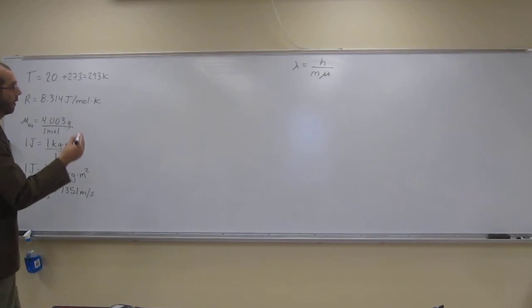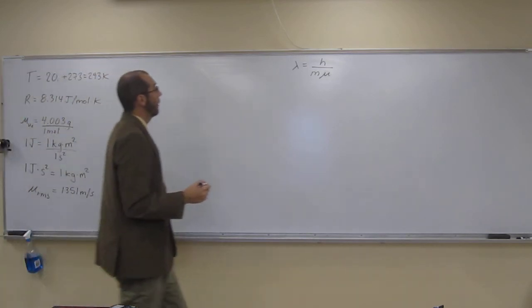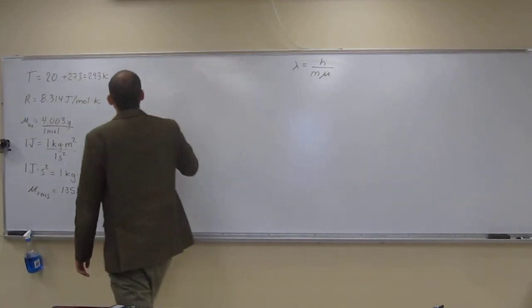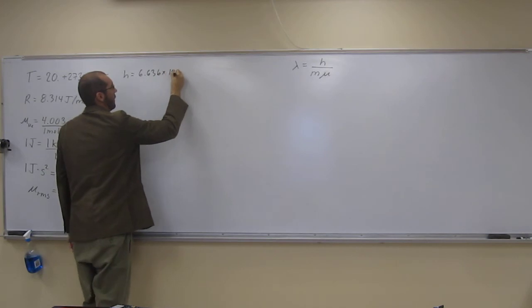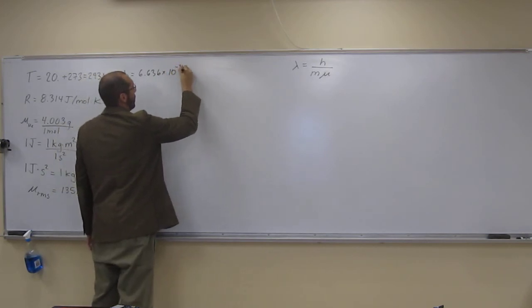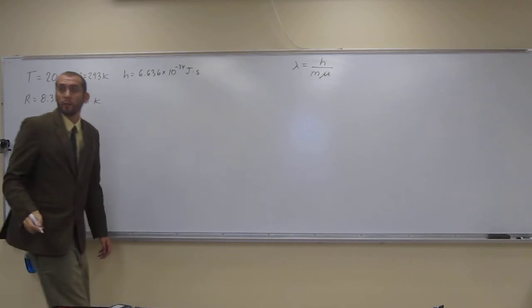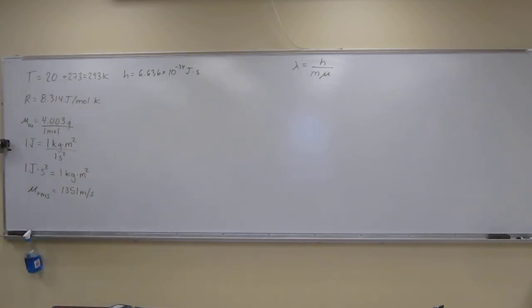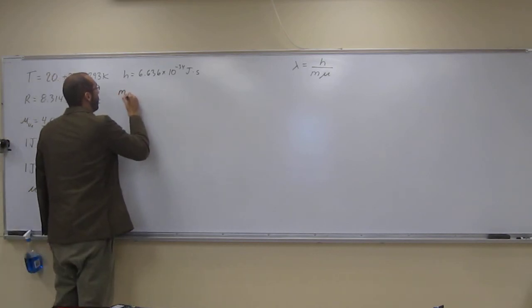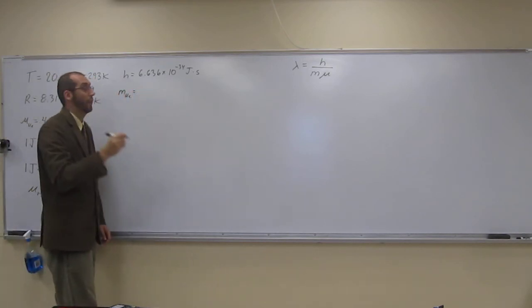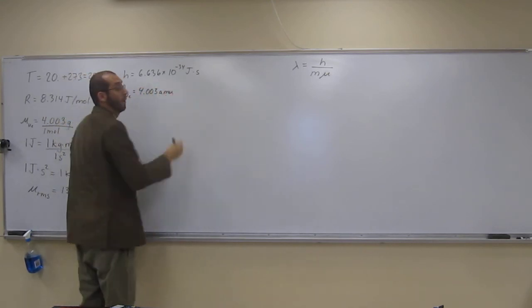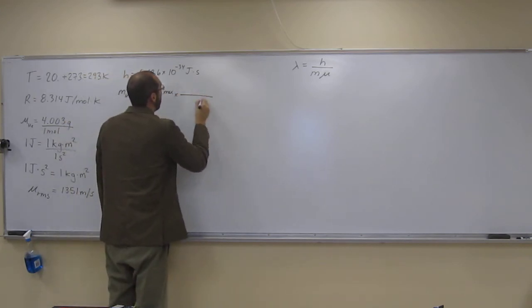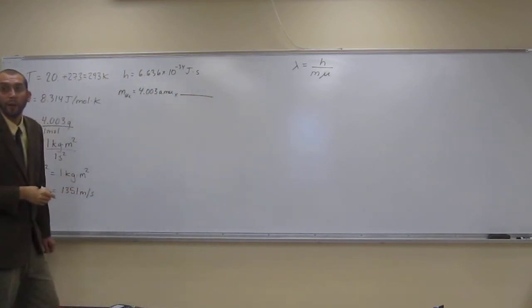Okay, so, well, what else do we need? We need to know what Planck's constant is. That's gonna be given to you. 6.626 times 10 to the negative 34 joules seconds. The mass of a helium atom. Well, from the periodic table, it's 4.003 amu, right? But we're gonna need this in kilograms.